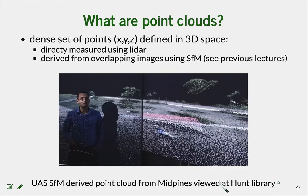What are point clouds? Point clouds are a set of points defined by coordinates in three-dimensional space. They can be derived in many different ways. We will focus on point clouds directly measured using LiDAR and on point clouds derived from overlapping images using structure from motion. Here you can see a visualization of a point cloud derived by structure from motion on a large screen in Hunt Library, where you can recognize features such as one of the buildings measured at mid-pines at our test area.